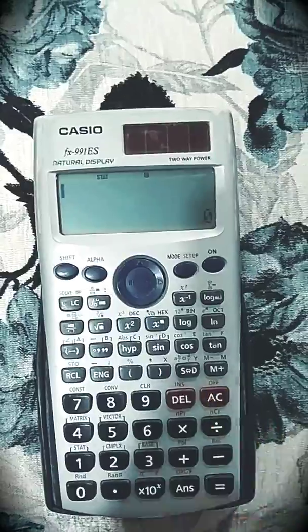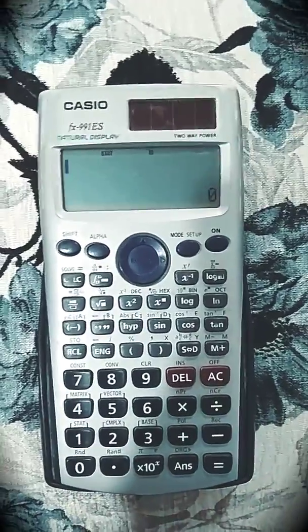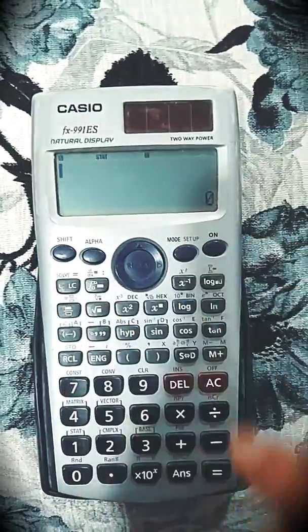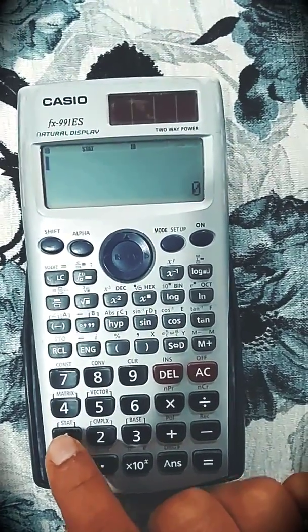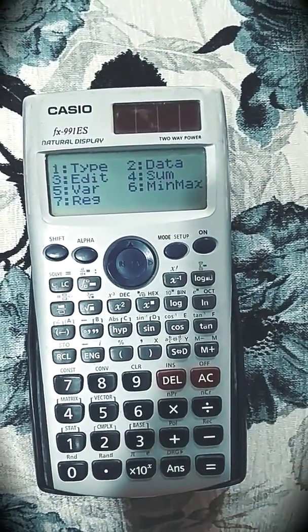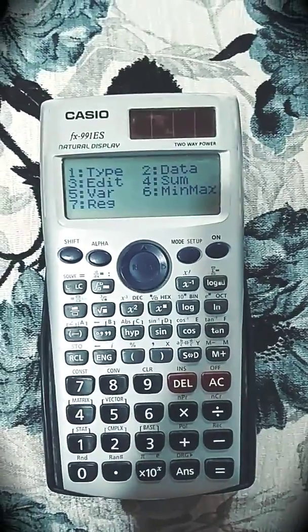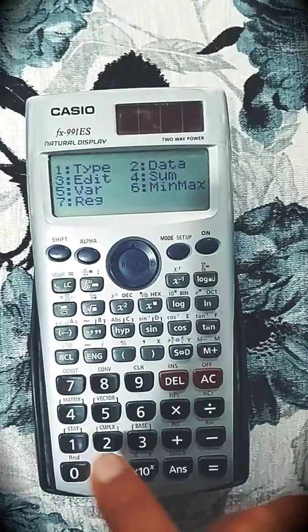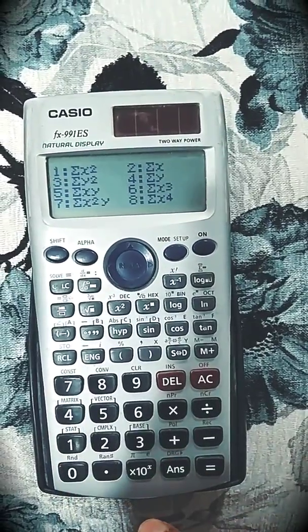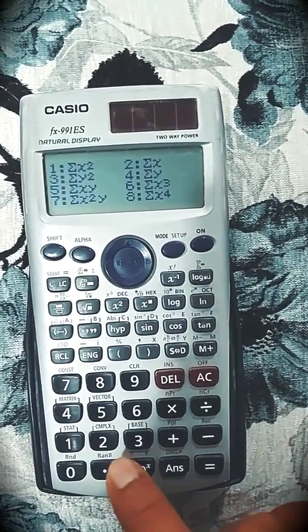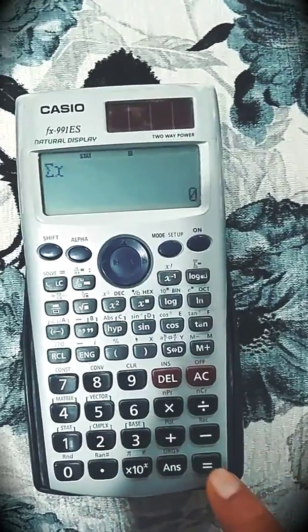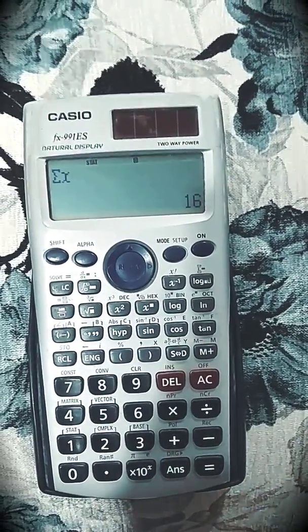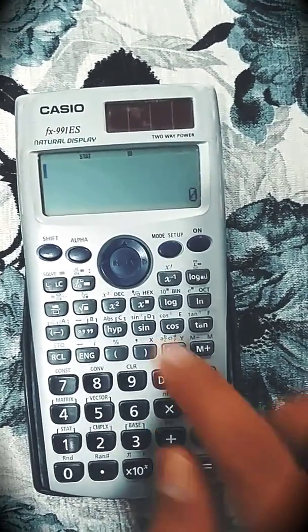Press AC. It will store the data. Now we want to calculate the summation. So shift, see the yellow color, stat. Shift 1 will give you these options. We will go for sum, which is available at 4 number. Now I want to get the summation of x, so I will press 2. Press equal to. You will get the answer.